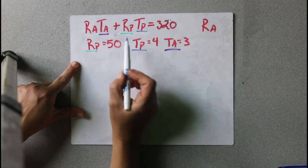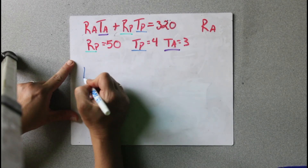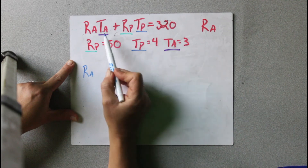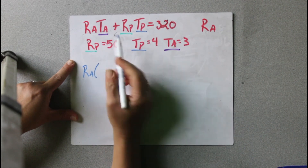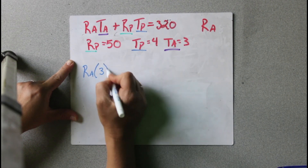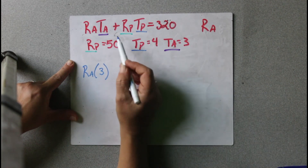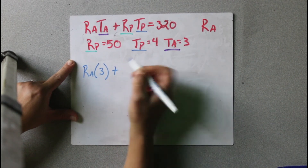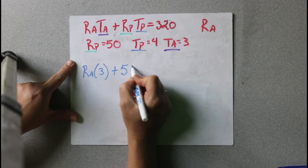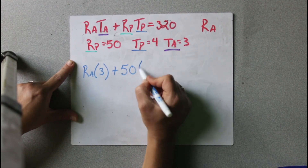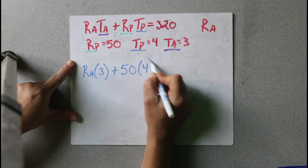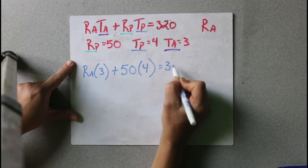So RA — we don't know that one, so we leave it. Times TA, and TA is 3. Plus RP, which is 50, times TP, which is 4, equals 320.